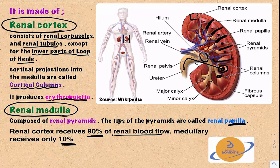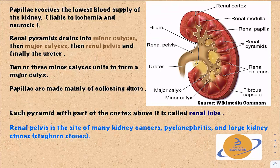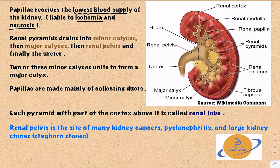Every two or three minor calyces unite together to form a major calyx, and this major calyx drains into the renal pelvis, and then the urine passes into the urinary bladder. The renal papilla receives the lowest blood supply, so it is very liable to ischemia and necrosis, which usually happens in the context of low blood flow to the kidney.